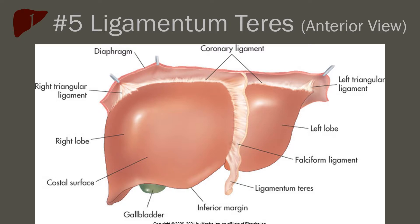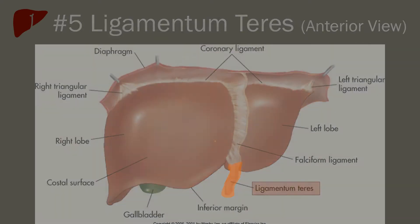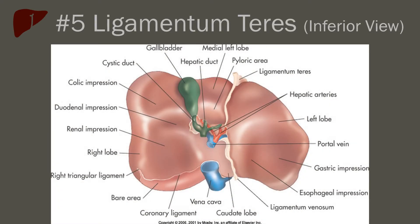The fifth ligament is the ligamentum teres, also known as the round ligament. Its composition is more that of a fibrous cord, and it is a remnant of what used to be the left umbilical vein. The ligamentum teres extends from the belly button to a notch on the anterior surface of the liver, then travels under the liver and posteriorly to join the ligamentum venosum. This image shows the bulkier free portion of the ligamentum teres on the anterior portion of the liver. The inferior view shows how the ligamentum teres wraps underneath and then travels posteriorly to meet up with the ligamentum venosum.